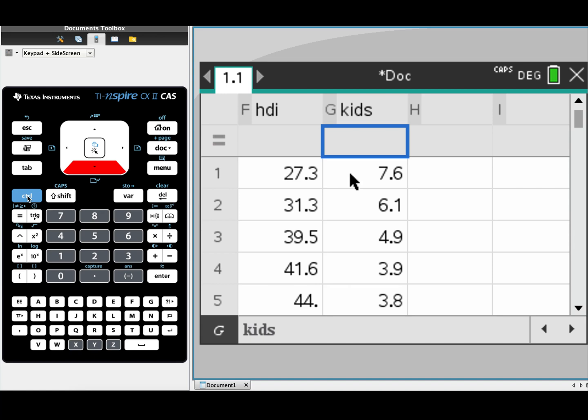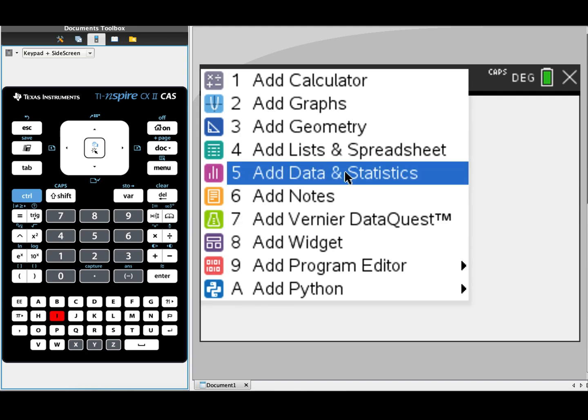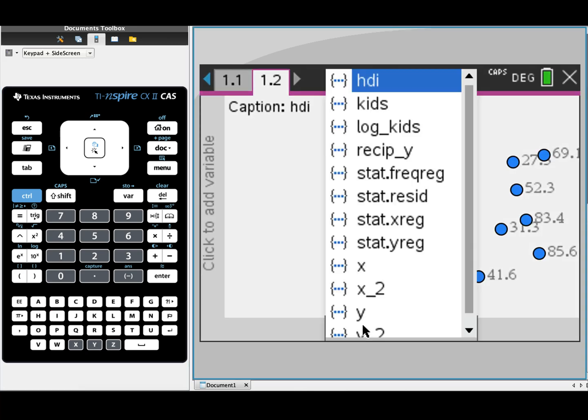Once I've put in my data, the next step is to insert a data and statistics page. To do that, one of the ways is to press control and then the letter I. We want to enter a data and statistics page.